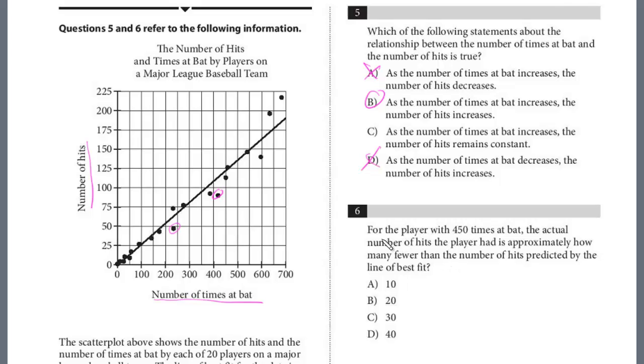How about number six? For the player with 450 times at bat, the actual number of hits the player had is approximately how many fewer than the number of hits predicted by the line of best fit? So we're just talking about the player with 450 times at bat.